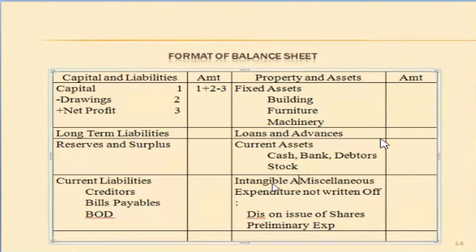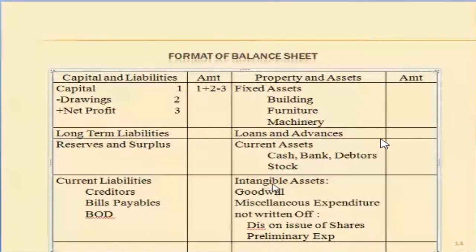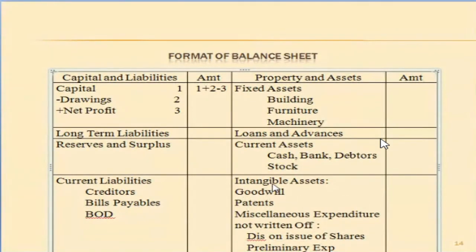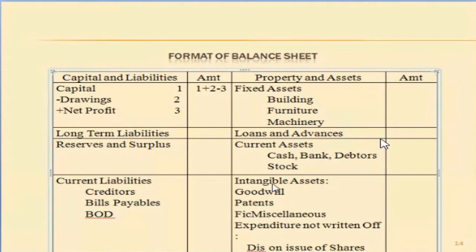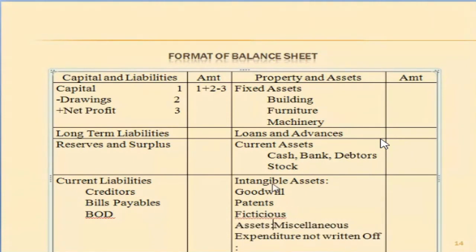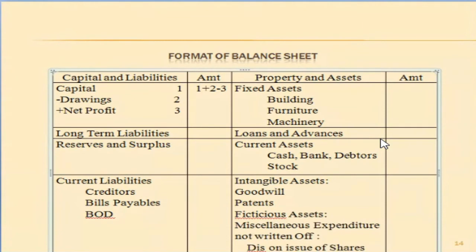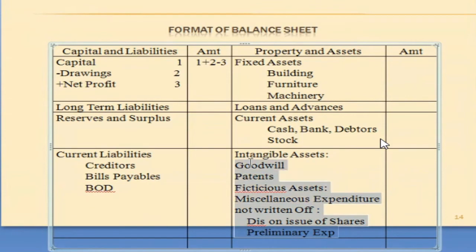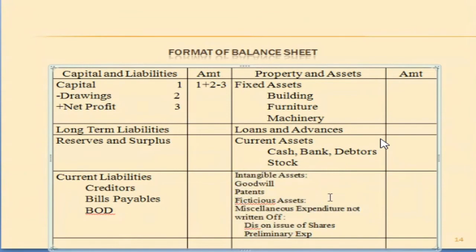Intangible assets include goodwill, patents, and copyrights. Then there is miscellaneous expenditure not written off — this is expenditure that is not really an asset but is written on the asset side to satisfy the accounting equation or as required by accounting rules. Fictitious assets are another such category written on the asset side even though they are not true assets.